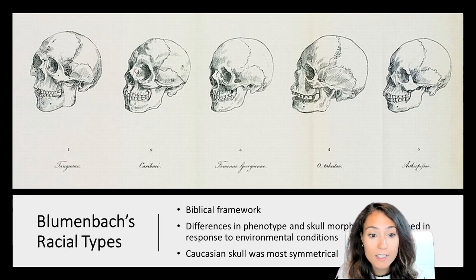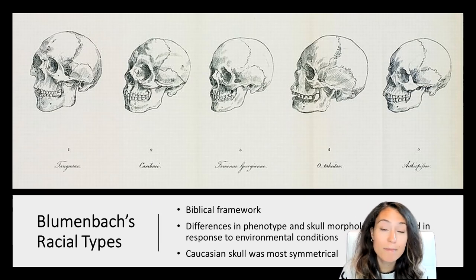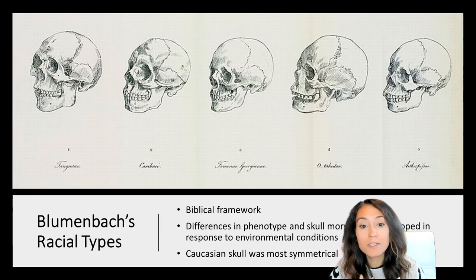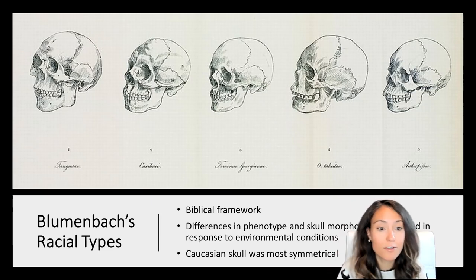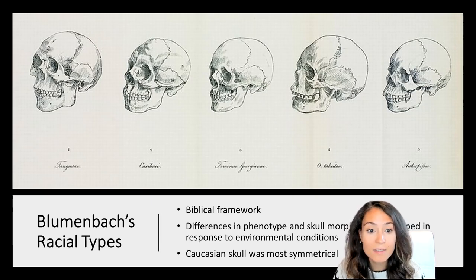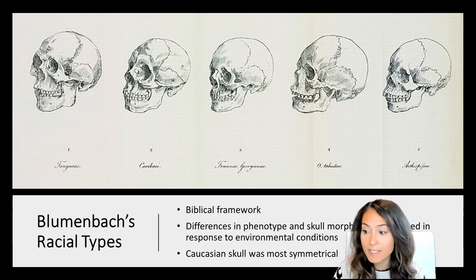Differences in phenotype, he proposed, developed in response to different environmental conditions that the people aboard Noah's Ark had encountered as they moved further and further away. He also argued that things like climate, diet, lifestyle, and disease had all contributed to the degeneration of non-Caucasian races.